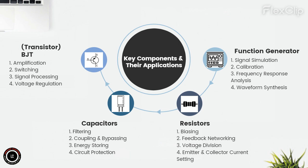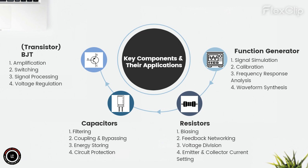Resistors: resistors step onto the stage as the architects of balance. They intricately bias transistors, dictating their operating points and ensuring consistent performance. Within feedback networks, they sculpt the amplifier's behavior, dictating gain, stability, and fidelity. Their mastery of voltage division shapes reference voltages and scales signals. They set the stage for emitter and collector currents, bringing harmony to amplifier operation and output.